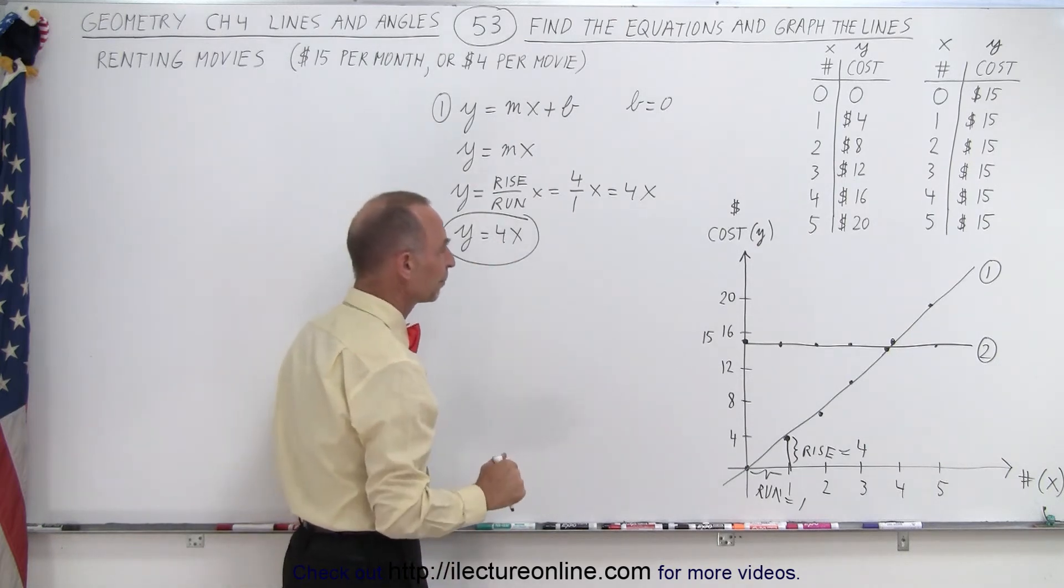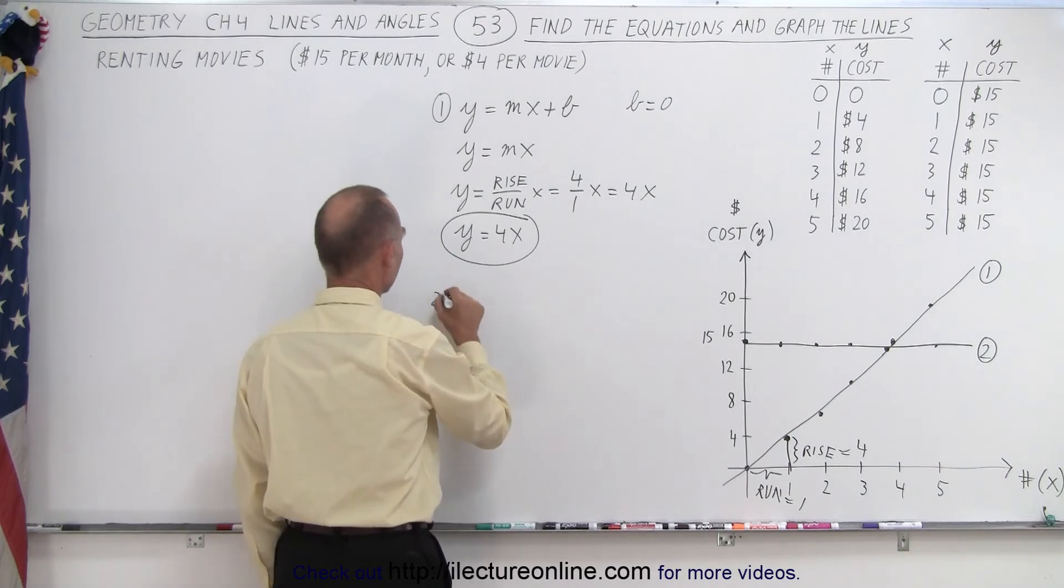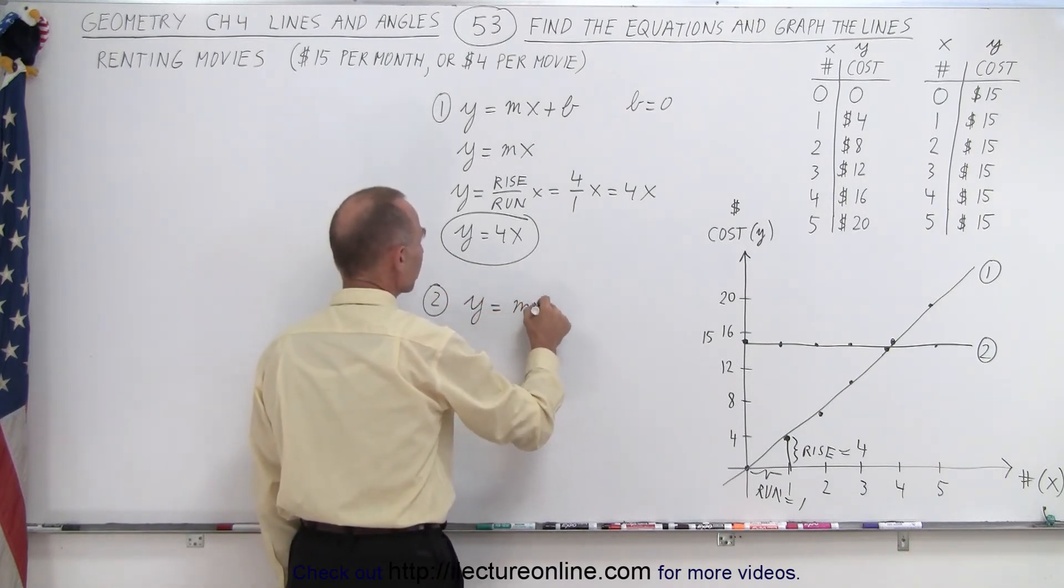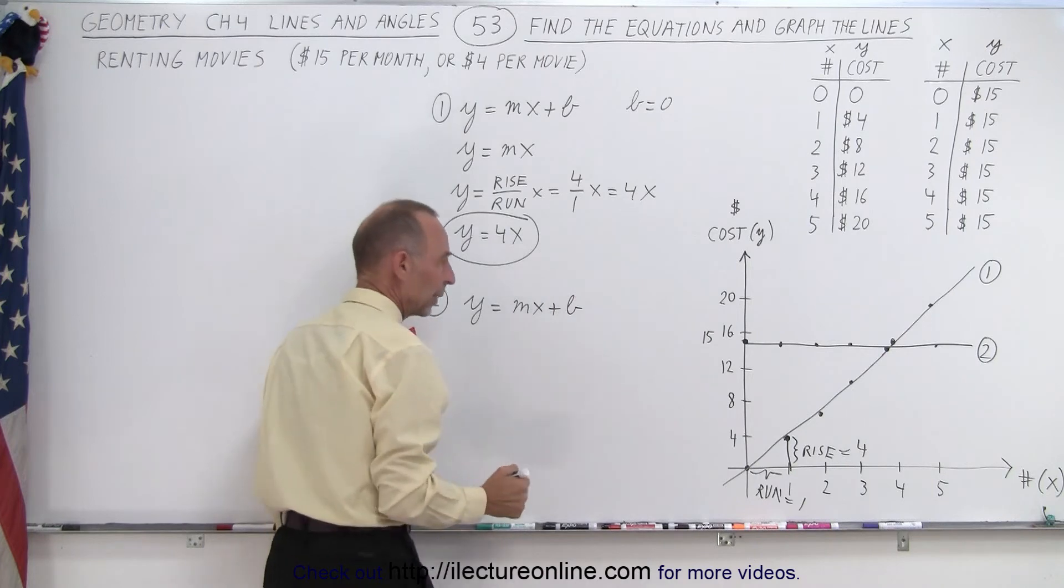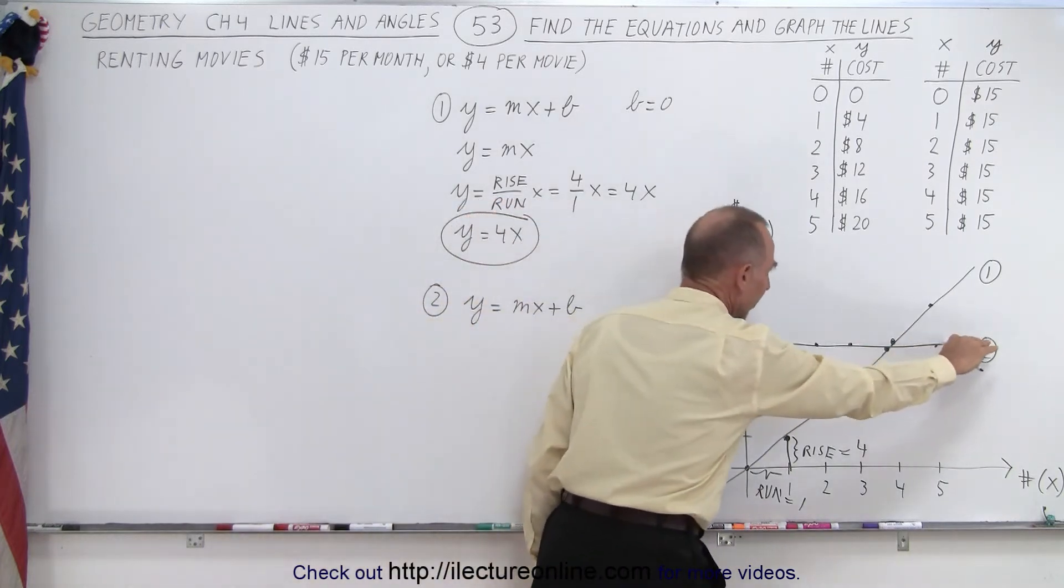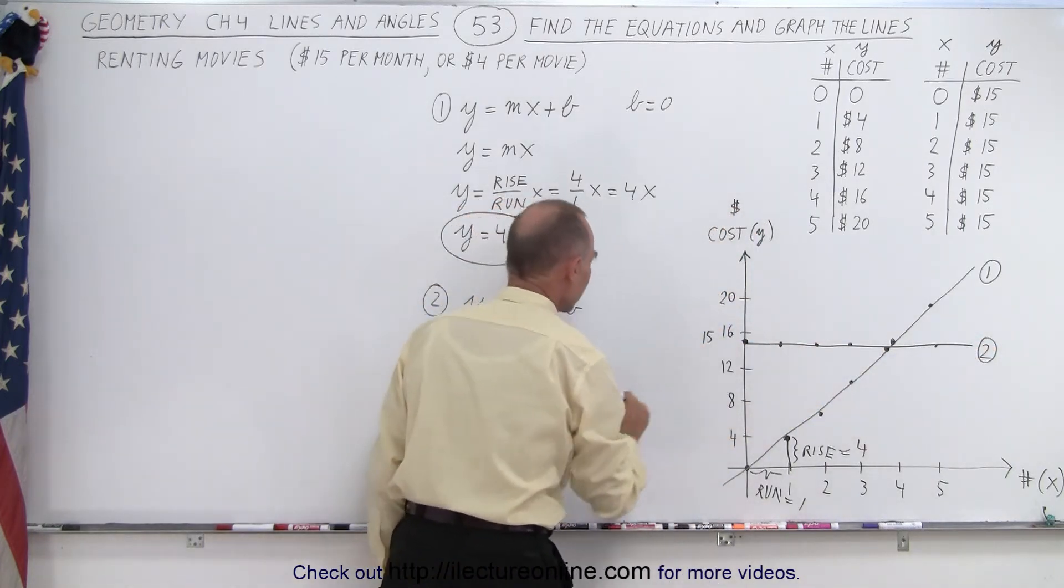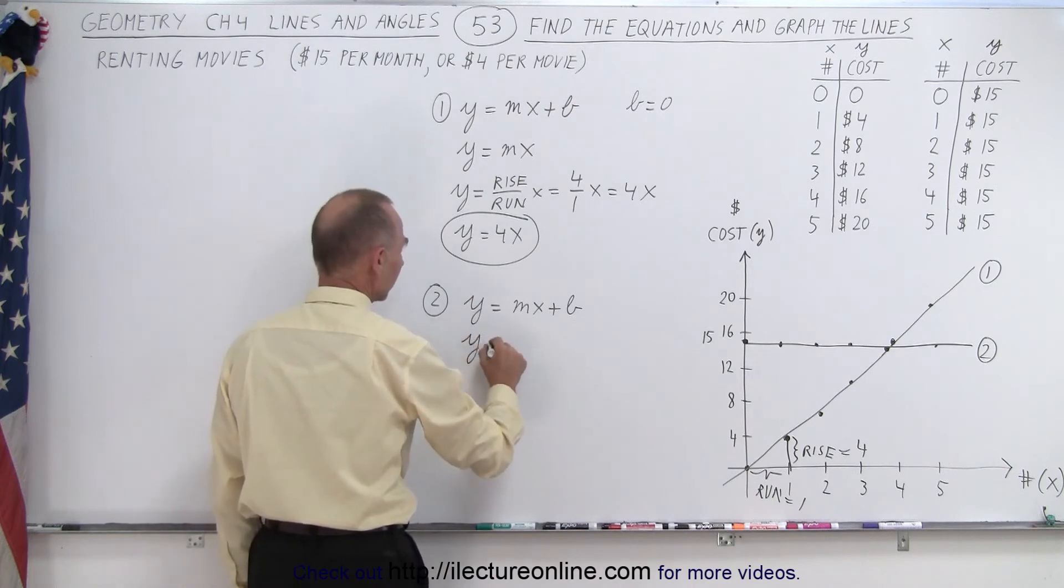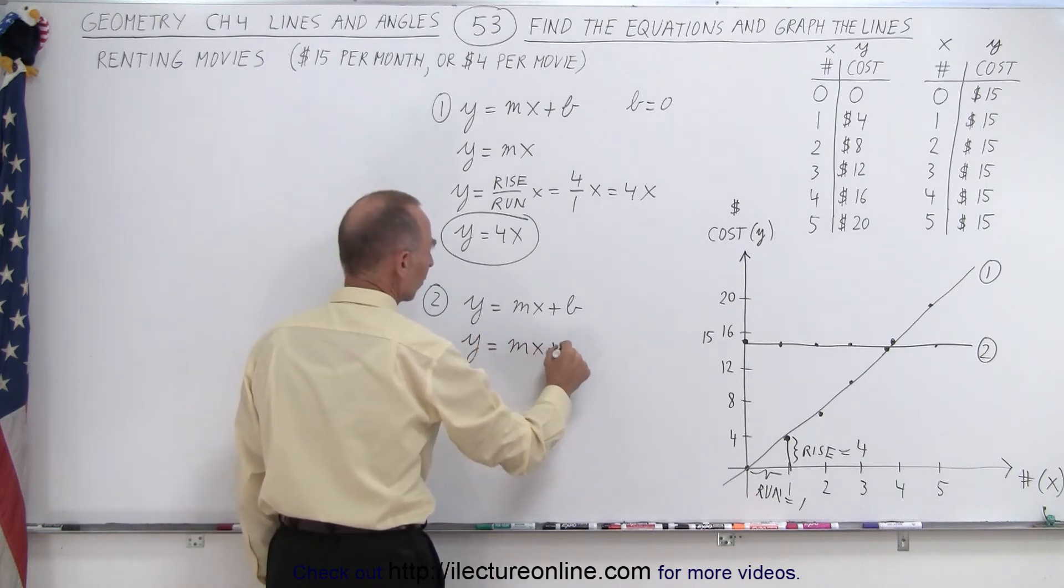How about the second one? Here for the second equation, we have y equals mx plus b. And right away again, I look for the intercept, and I can see that the intercept is at fifteen. So there you can say that y is equal to mx plus fifteen.